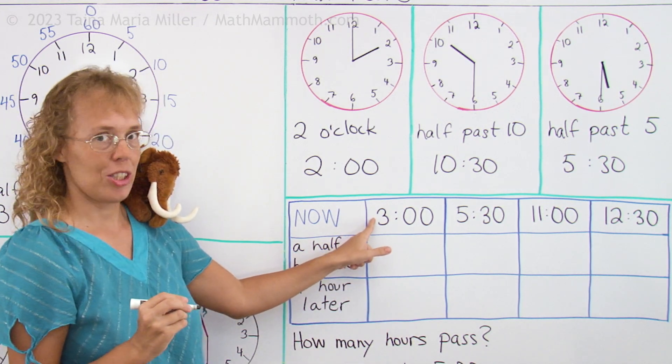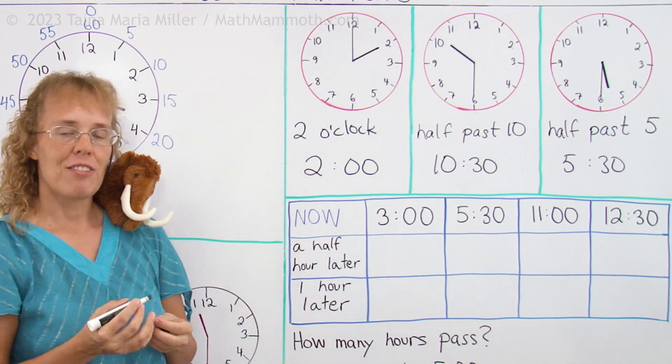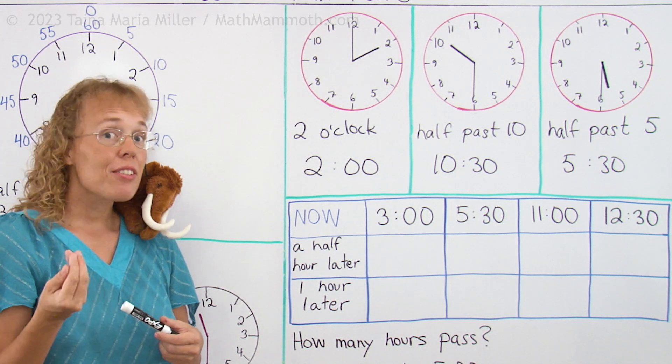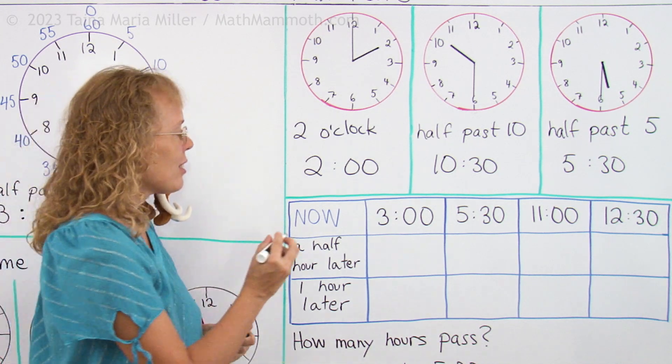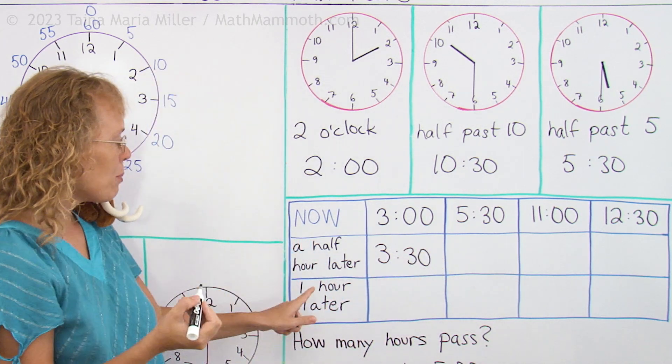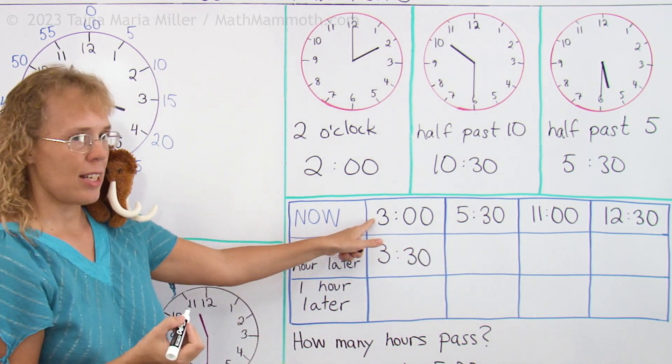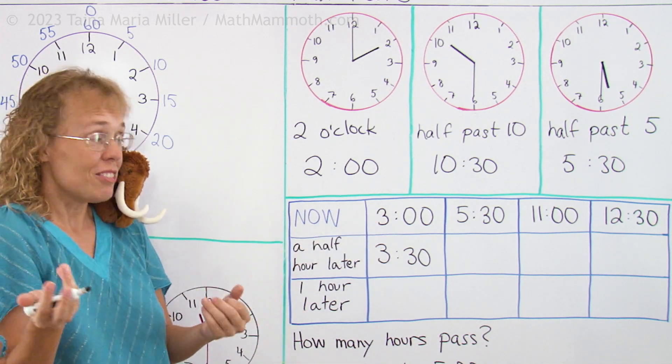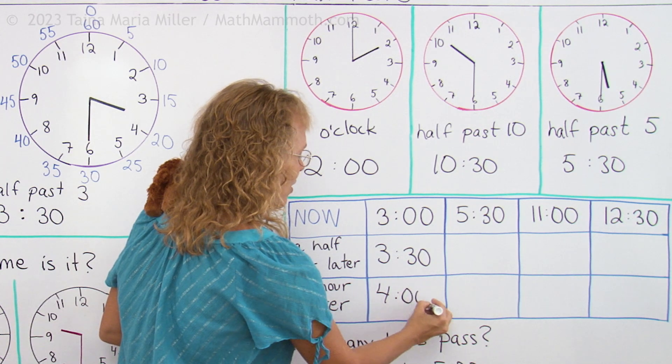If it is now 3 o'clock, what time is it a half hour later? It would be half past 3, but we write it with numbers as 3 hours and 30 minutes. And then what time would it be exactly one hour later than this time? One hour later than 3 o'clock would be, of course, 3 plus 1, 4 o'clock. So 4 and 0, 0.